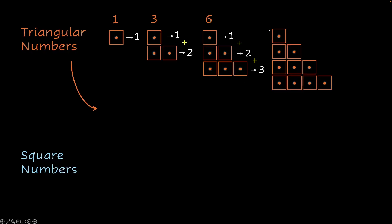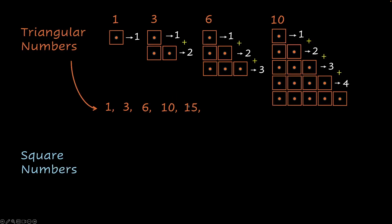Similarly, we take 6 and add the next natural number in line. After 1, 2, and 3, we get 4. So 1 plus 2 plus 3 plus 4 equals 10. And we can keep going with this pattern. 1 plus 2 gives you 3; 1 plus 2 plus 3 gives you 6; plus 4 gives you 10. After 10, we add 5, so 10 plus 5 is 15. We added 5 blocks to the previous number.